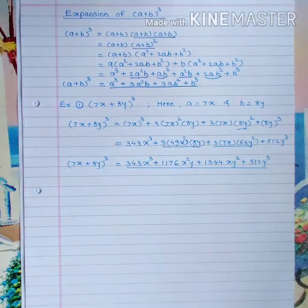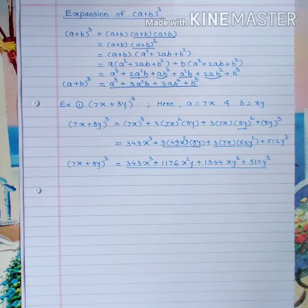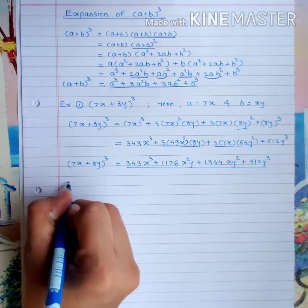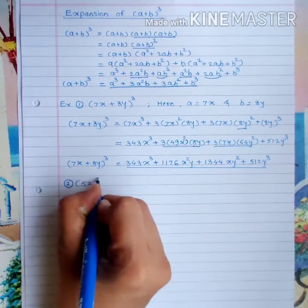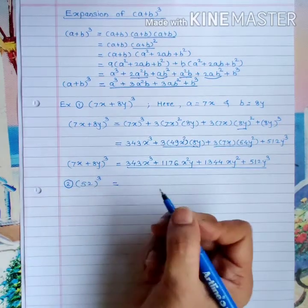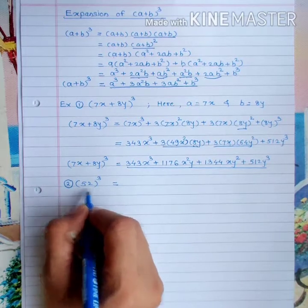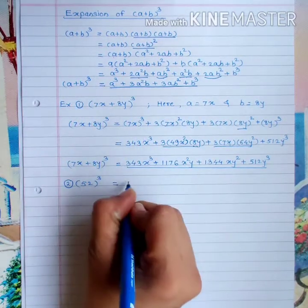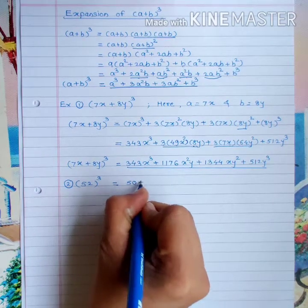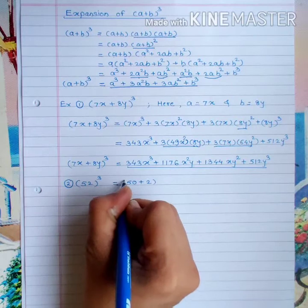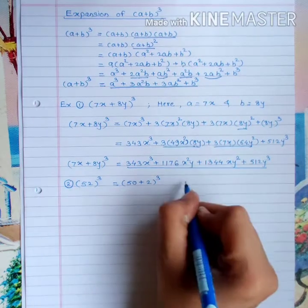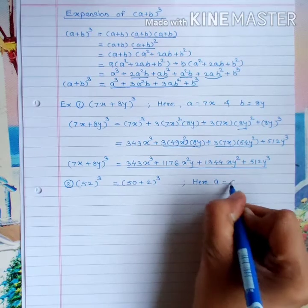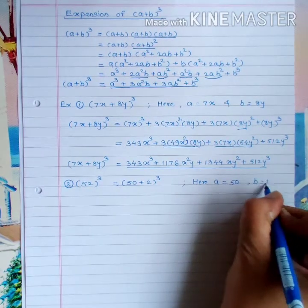Now let us solve another example: find the value of 52³. Write 52 in the form (a+b)³: 52 = 50 + 2, so 52³ = (50 + 2)³. Here a = 50 and b = 2.